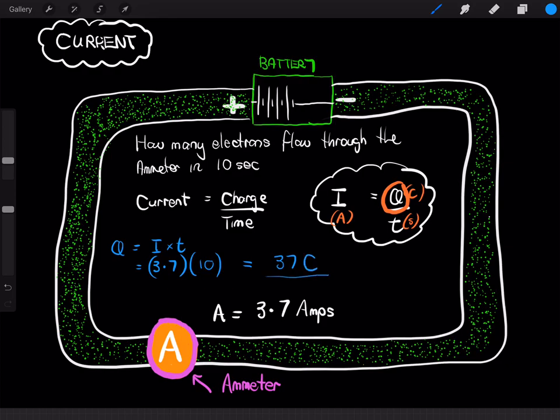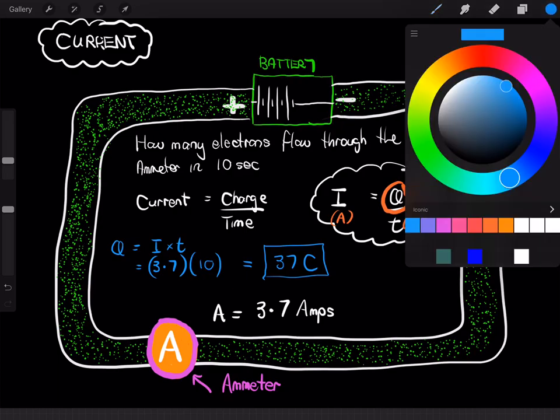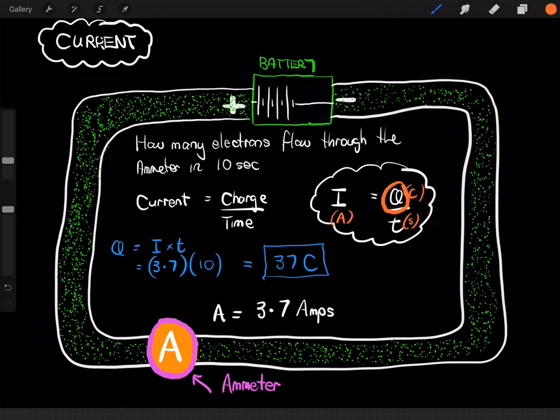So, that's the amount of charge in Coulombs that has flowed through that ammeter. But, we actually want to work out how many electrons that means, or equals. Well, we know that one Coulomb of charge, 1 Coulomb equals 6.24 times 10 to the 18 electrons, 2 Coulombs would be twice that amount, and so on.